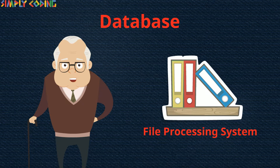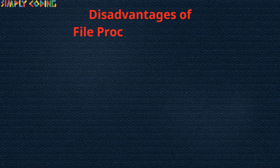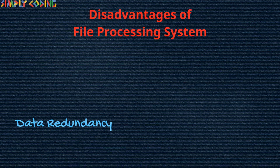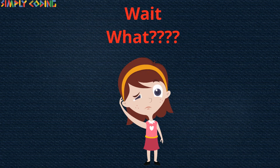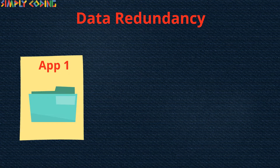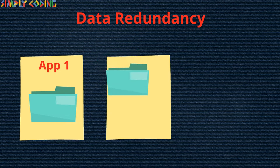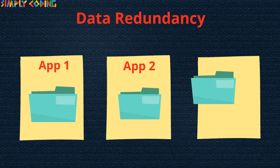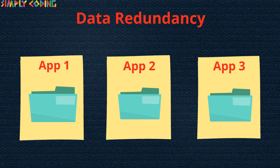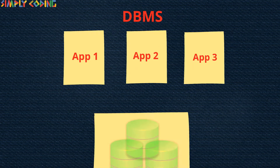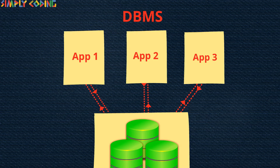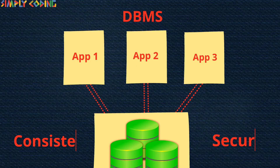Why can't we use our old file processing system? File processing system has disadvantages like data redundancy, data inconsistency, unshareable data, unstandardized data, insecure data, etc. Let's understand each of them one by one. Data redundancy means duplication of data. Non-database systems maintain a separate copy of data for each application. This duplication of data may lead to inconsistency or incorrect data at times. DBMS stores all data at one place and all application programs that require this data can refer to the same central place. This centralization makes sure that data remains consistent and secure.